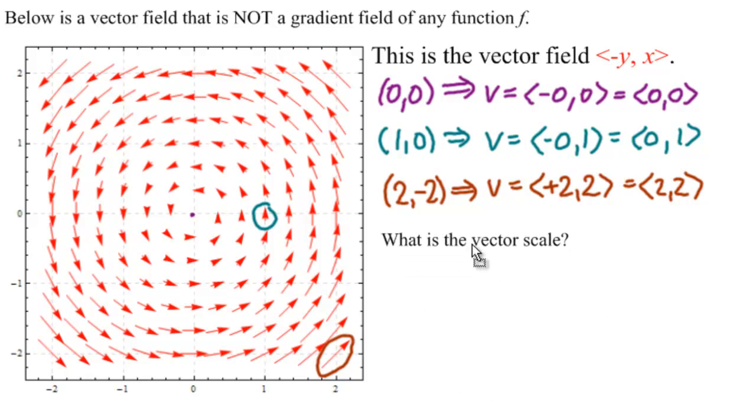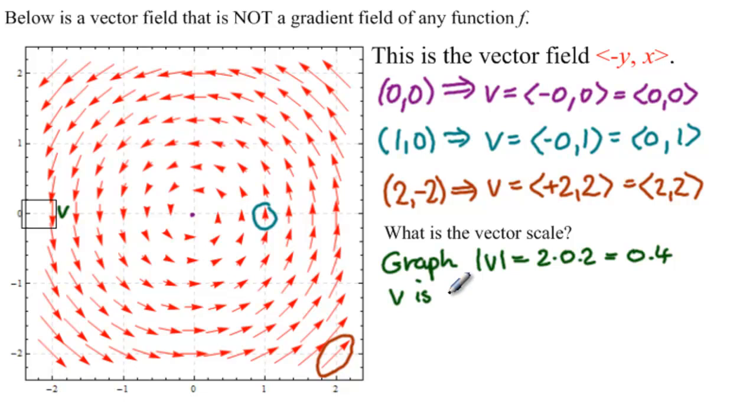That brings up the point about what is the vector scale of this depiction of the vector field. And let's pick an easy vector. I looked at this and this looks like an easy vector here to check out. It's at a point we can check out, (-2, 0). And it looks like it has two tick marks worth of length. So on the graph, we'll label this v. The magnitude of v appears to be two times the tick marks, which are 0.2 apart, so 0.4. v is at a point (-2, 0).